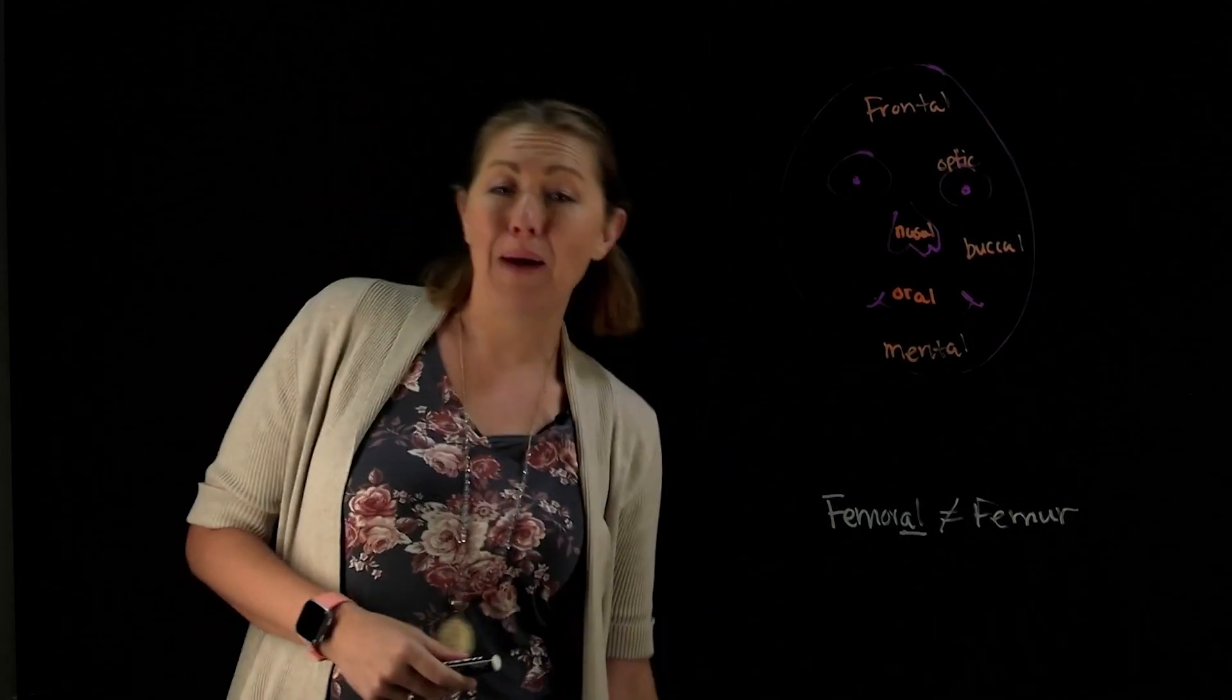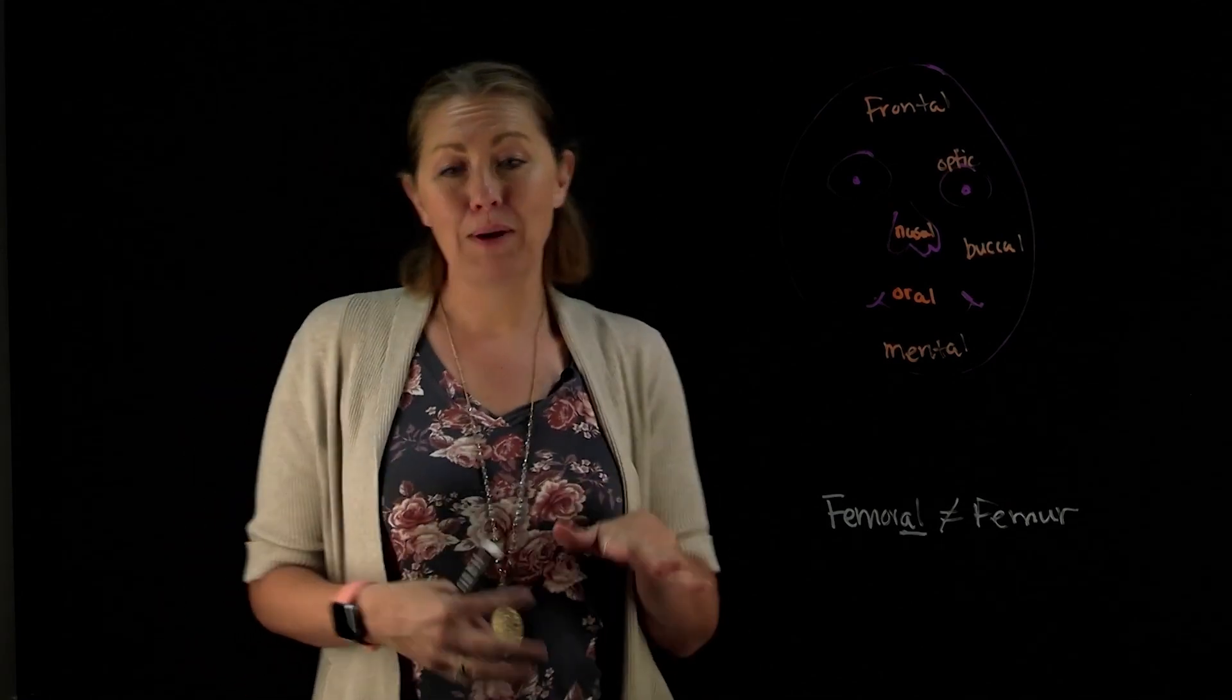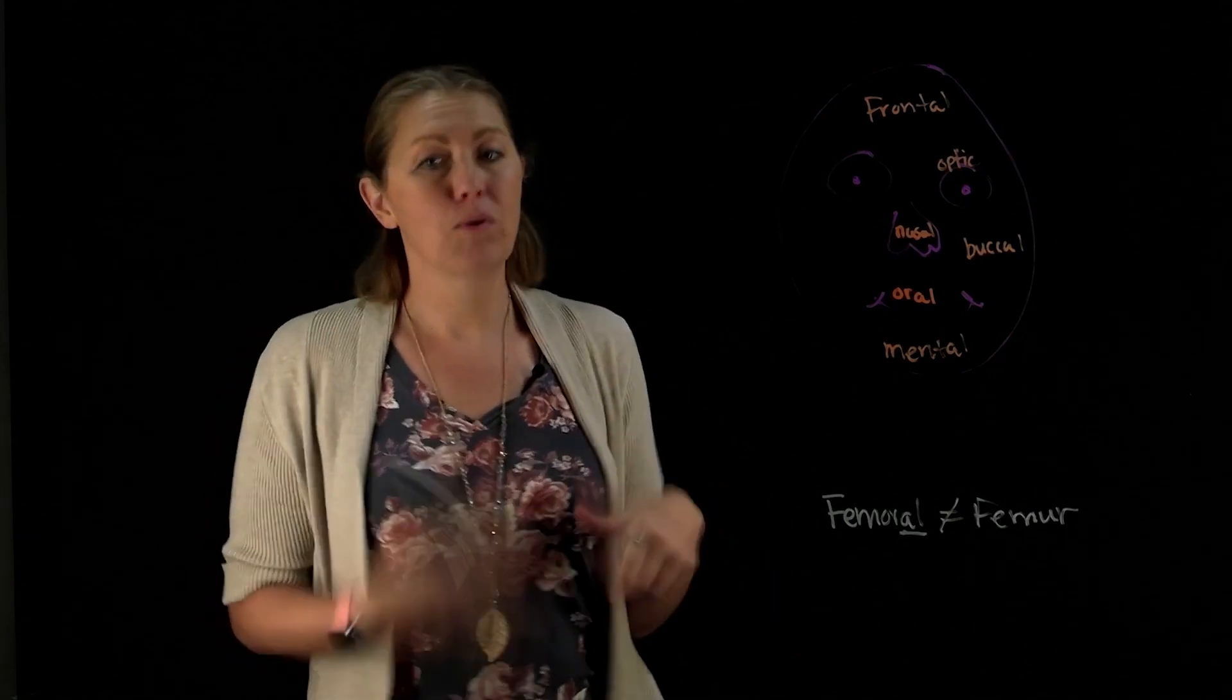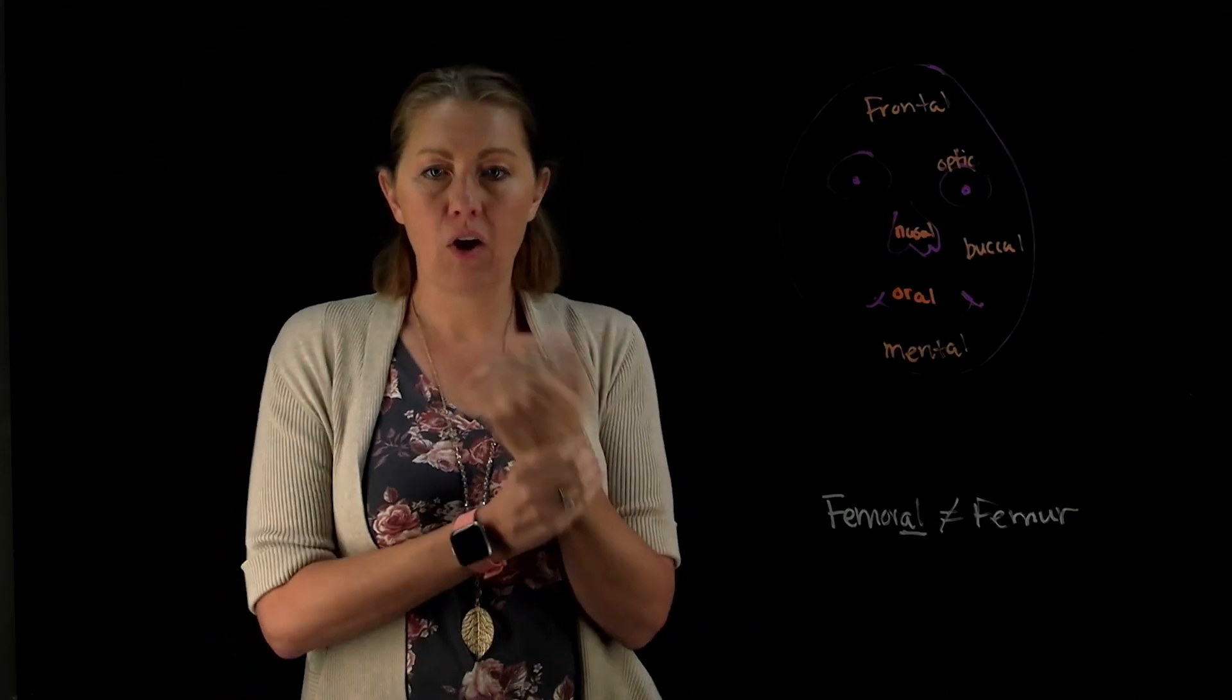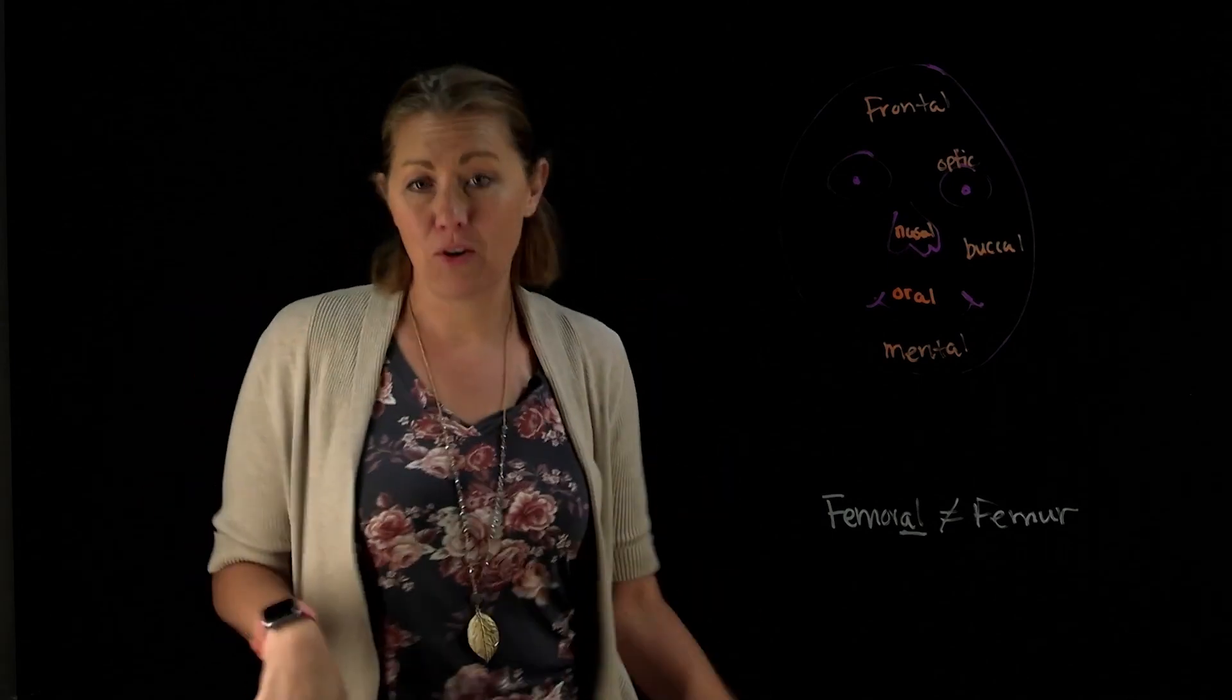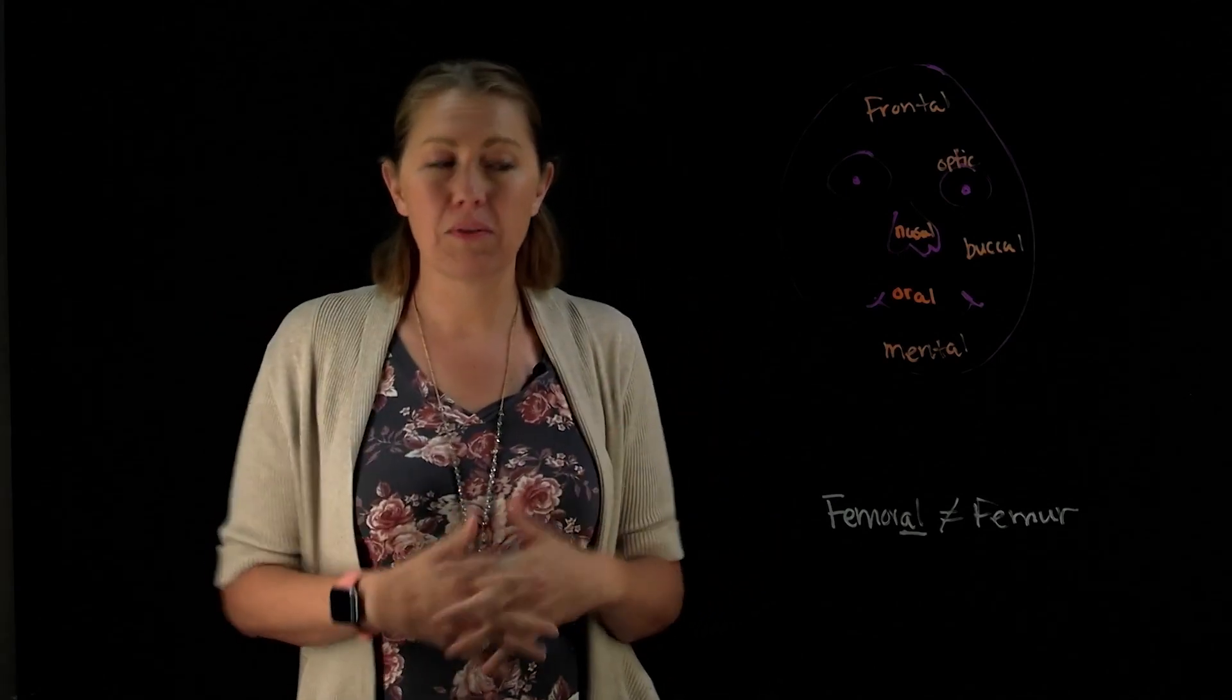Another really fun one is popliteal, the back of the knee. The trick I use for that is I think if you pop out your knee, the back of it would turn teal. So popliteal, back of the knee, because it would turn teal. Carpal for wrist, tarsal would be ankle. The names are similar. I think carpal because that starts with a C, is sooner in the alphabet, so it's going to be the one that's higher than tarsal on the ankle. Find things to relate the terms, help them stick a little bit more.